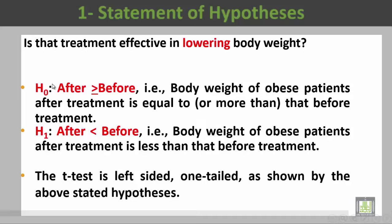Based on H1, we are going to write H-naught. H-naught will be: the weight after treatment is more than or equal to before treatment — that is to say, body weight of obese patients after treatment is equal to or more than that before treatment. The t-test is left-tailed, one-tailed, as shown by the above stated hypothesis — it's left-tailed because this sign points to the left.